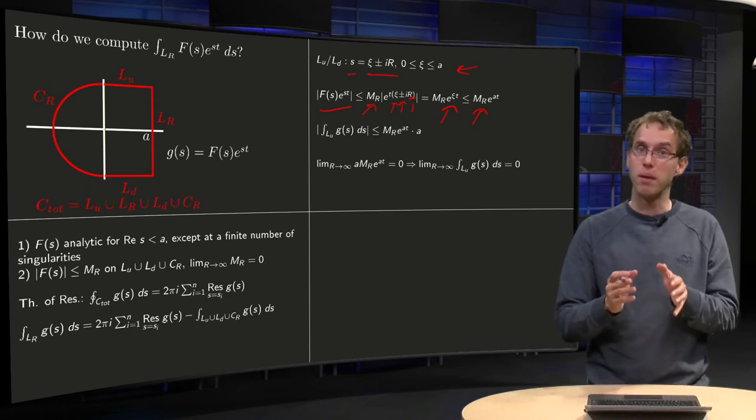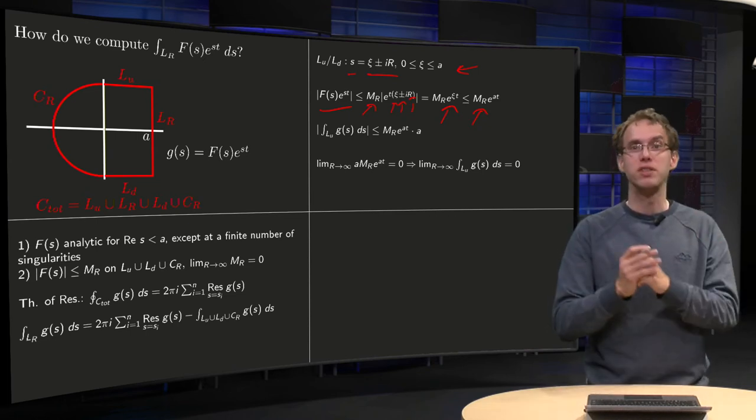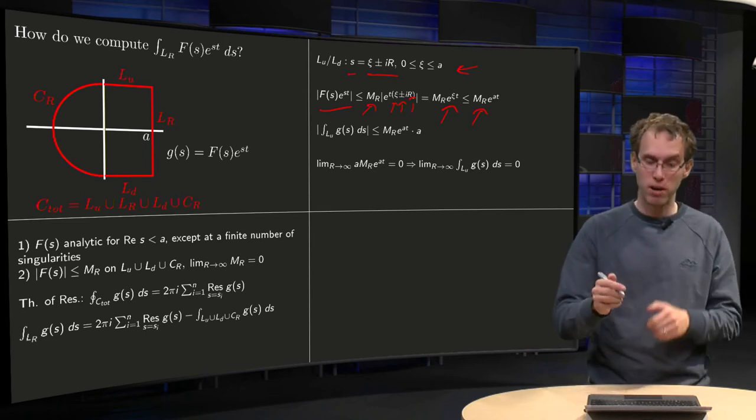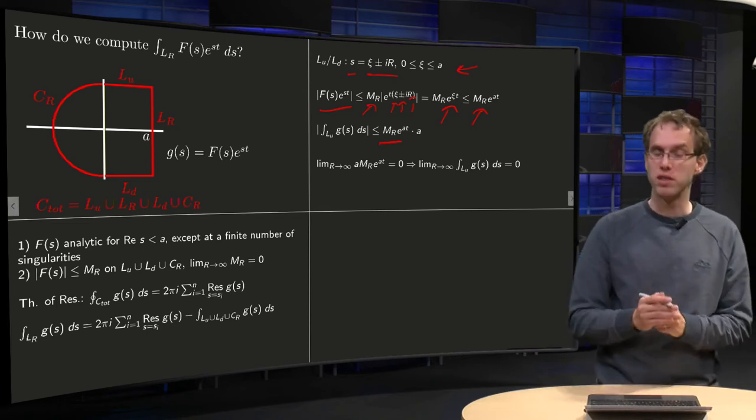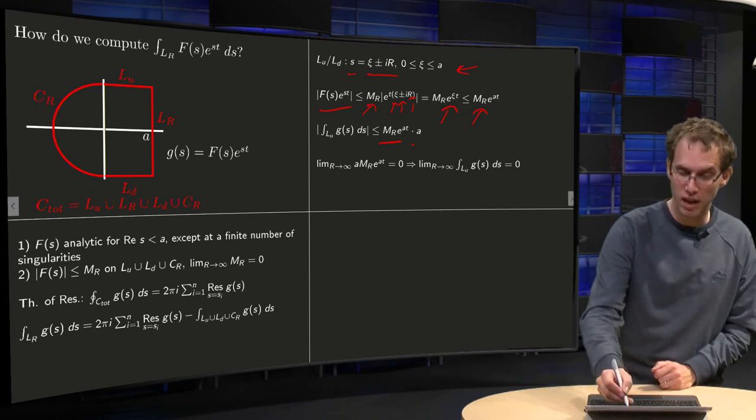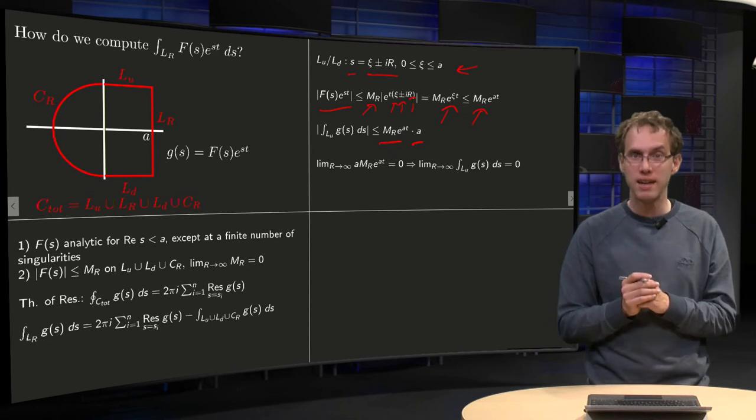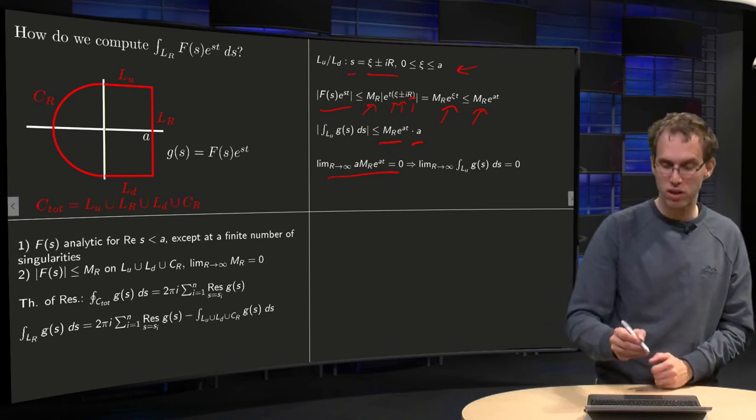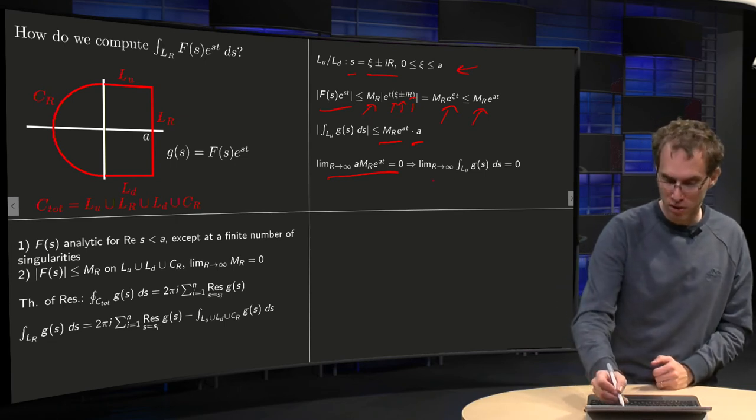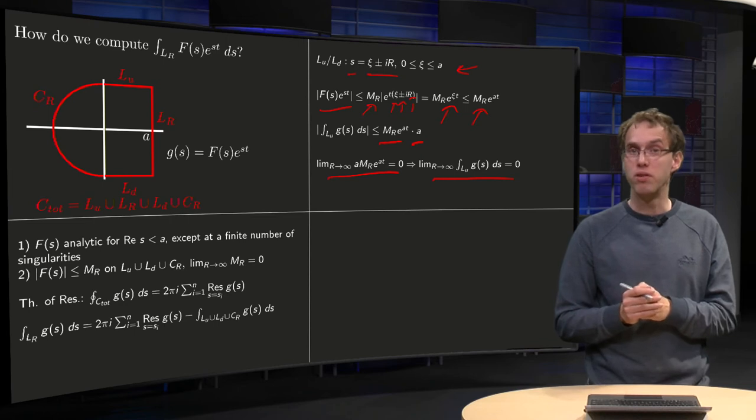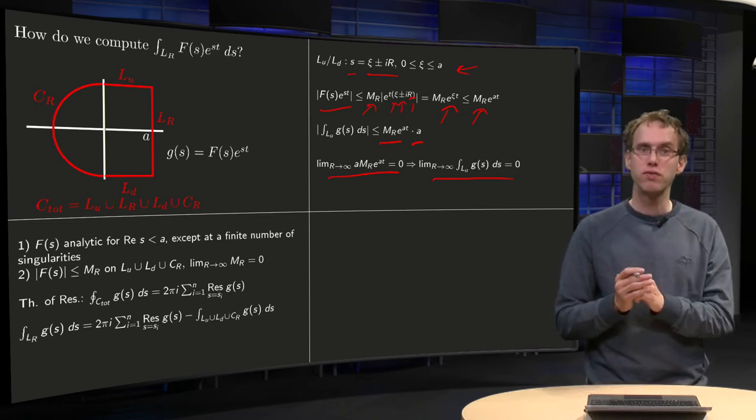And then we use the ML theorem. The norm of G(s) is bounded by M_R times e^(at), and the norm of the integral is bounded by this M_R times e^(at) times the length of the integration interval, which is just a, some finite number a, so if we take the limit to infinity, we get 0 over here, which means that the limit R to infinity integral over L_up and L_down also vanishes.